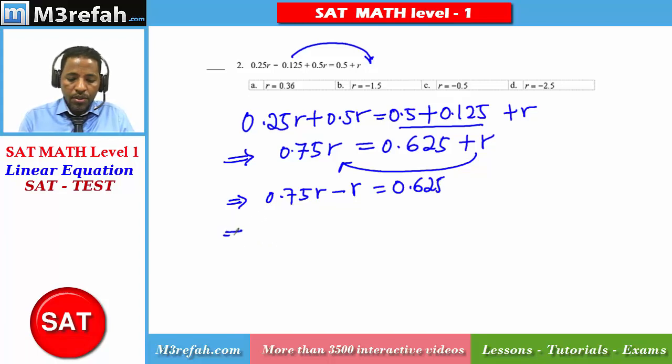Here we have two terms involving variable r. So you can factor out r and inside the bracket you will have 0.75 minus 1. When you factor r out of the bracket, 1 remains there.